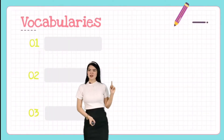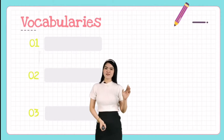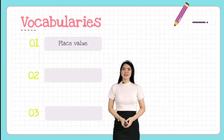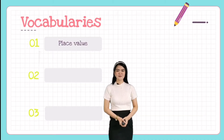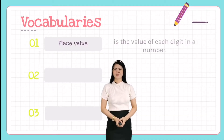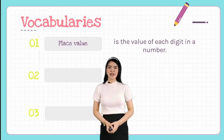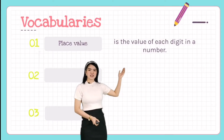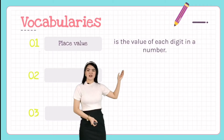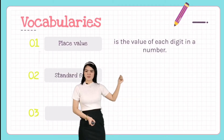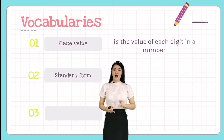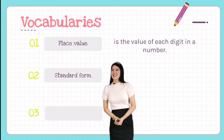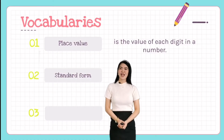First, let's have some vocabularies. The first vocabulary we have is place value. So what is place value? Place value is the value of each digit in a number — for example, ones, tens, and hundreds.